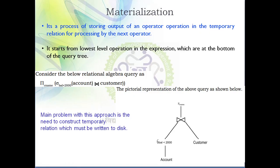Here you can use the concept of materialization as well as pipelining. In this case, the very first operation to be performed is selection on the account relation, then join operation, and finally projection operation. We generate a query evaluation plan — a diagrammatic representation of this query — which shows selection on account relation, then join, then projection.